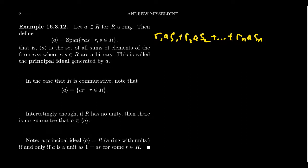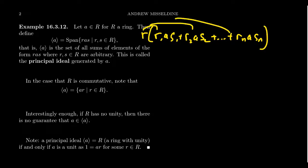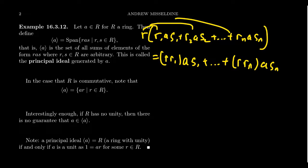Why is this an ideal? If you take a sum of elements of the form r·a·s and add it to another such sum, you get a larger sum of the same form, so it's closed under addition. For ideal multiplication: if you take such a sum and multiply on the left by some ring element r, the distributive property and associativity give you r·r₁·a·s₁ + ··· + r·rₙ·a·sₙ, which still has the correct form. So the principal ideal generated by a is indeed an ideal.